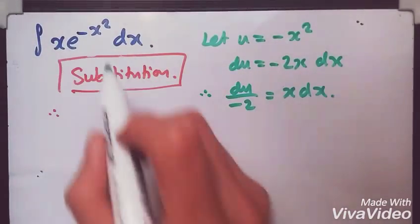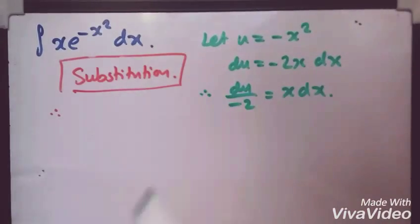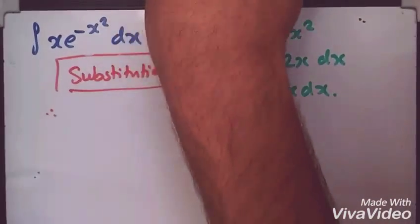We have x dx here, x times dx. Minus x squared is there, so if you just replace and boom, go.